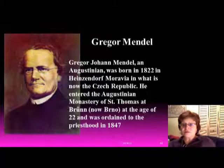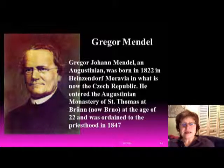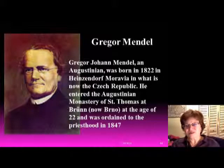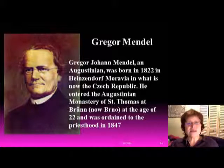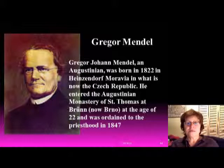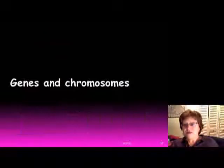Gregor Mendel is the father of genetics. He was an Augustinian monk, born in 1822 in Moravia, what is now the Czech Republic. He entered the monastery when he was 22 years old, and his hobby was gardening. He did studies in plant hybridization and proved the existence of elementary units of heredity, which we now call genes, and established the statistical laws governing them. He used different color pea plants to do his research.